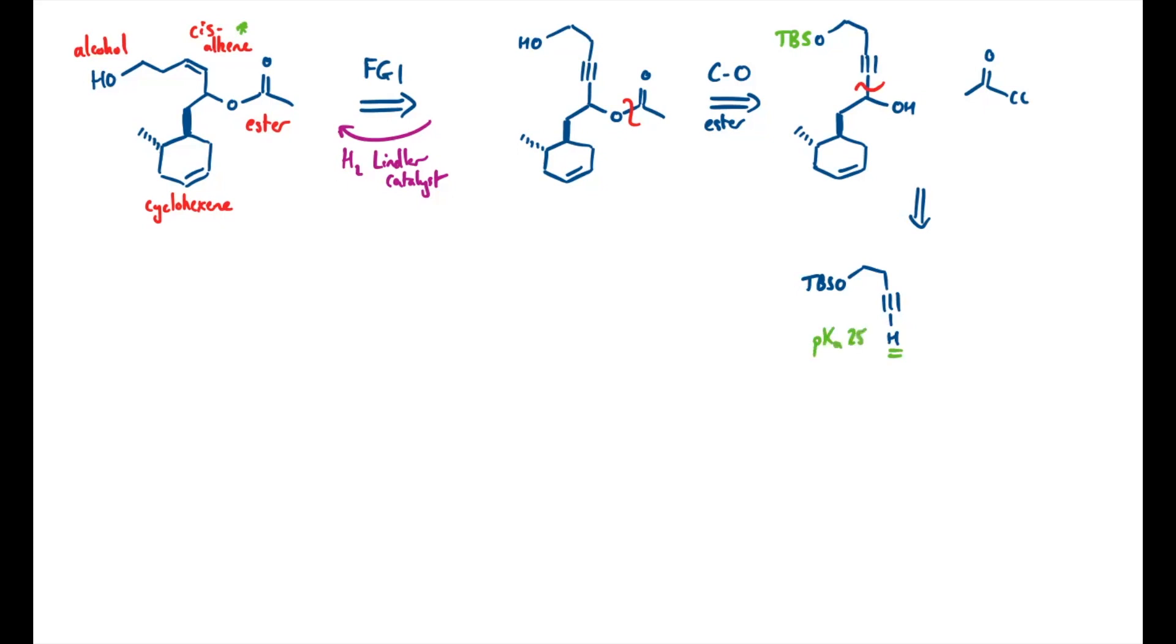That's because the anion will be left in an sp hybrid orbital, has 50% s character, so quite a low energy orbital, so the conjugate base is more stable than maybe you'd expect for a carbon-based negative charge. The other component will be this aldehyde.